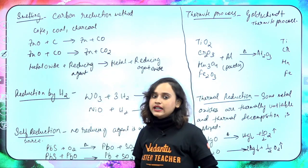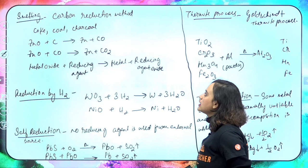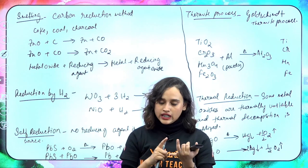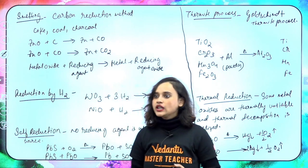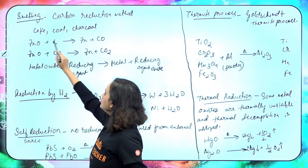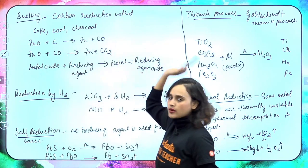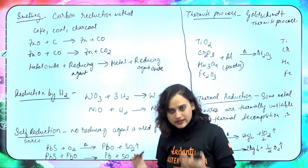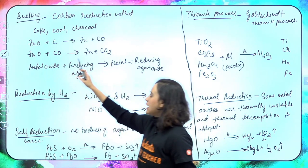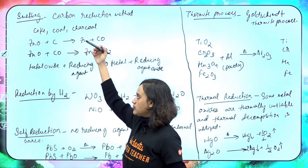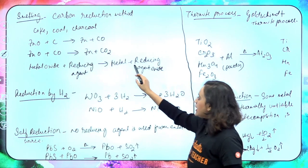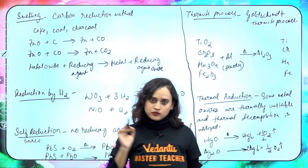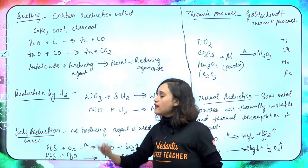For reduction of metal oxides to get the metal, we have smelting, which is a carbon reduction method. We use coke, charcoal, or coal. Metal oxide + carbon (or carbon monoxide as reducing agent) → metal + reducing agent oxide. For example, ZnO + C → Zn + CO. We also have reduction by hydrogen — for example, tungsten oxide + 3H₂ → tungsten + water. Similarly for nickel.